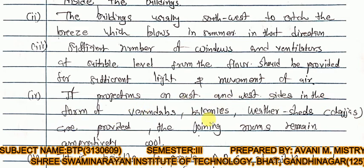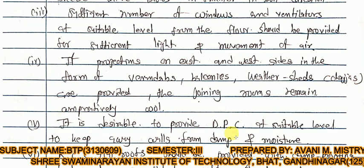If projections on the east and west sides in the form of verandas, balconies, and weather shades are provided, the adjoining rooms remain comparatively cool. This is because the weather shades prevent direct sunlight and sun rays from hitting the walls, so the rooms attached to the veranda, balcony, or weather shade remain cooler.